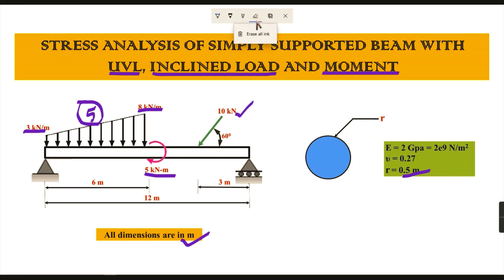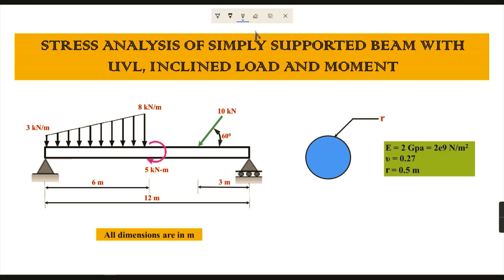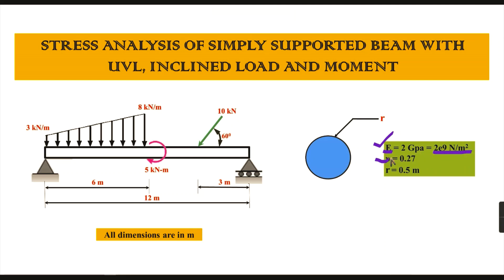With the help of these parameters we can draw the simply supported beam with a circular solid cross-section and find the shear force diagram and bending moment diagram. Additional input parameters are: E value (Young's modulus) of 2e9 Newton per meter square, and Poisson's ratio (mu) of 0.27.